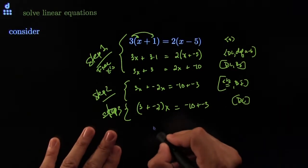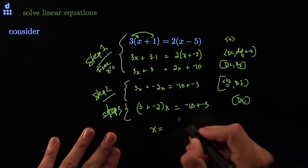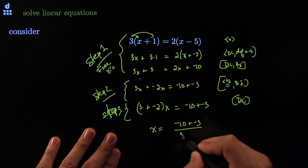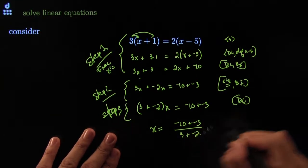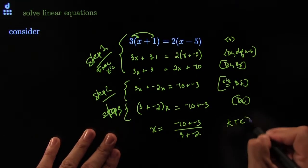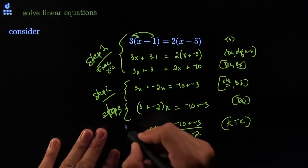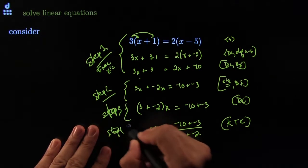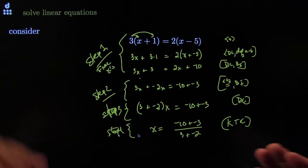And of course step four: kill the coefficient. Negative ten plus negative three, all over three plus negative two — kill the coefficient. Step four. Beautiful.